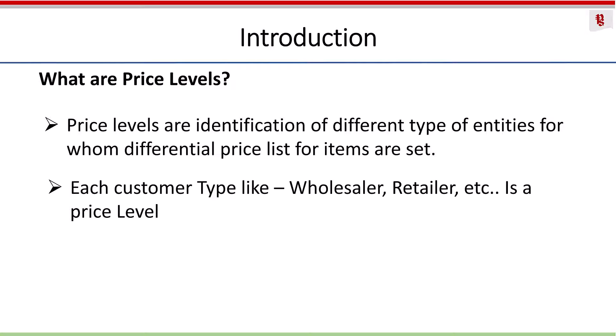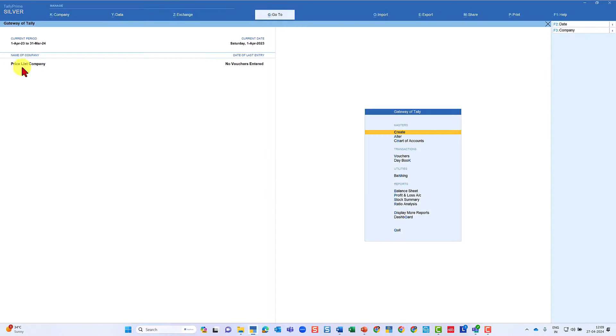For example, the rate for an item for a wholesaler will be different from the price level of a retailer — the rate would differ between the wholesaler and retailer. Let us now go to Tally and learn how to enable price levels in Tally Prime and create the required levels. I have created a price list company for us to understand the feature of price list.